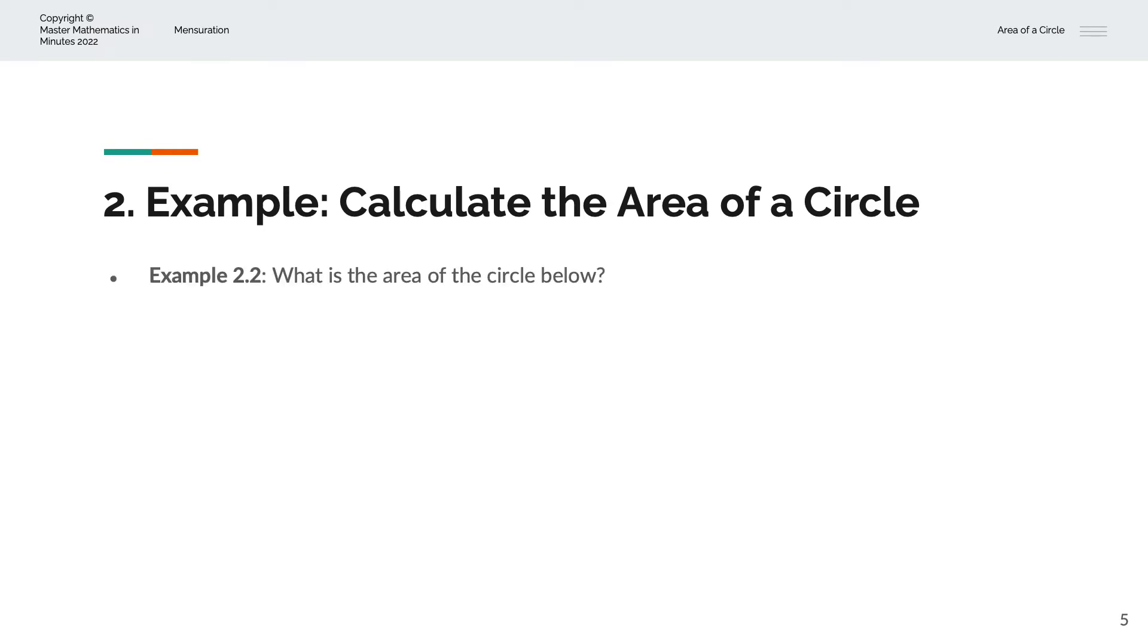In the second example, we'll also calculate the area of the circle below. And this circle has a diameter of 10 centimeters. And so it's easier to divide the diameter by 2 to obtain the radius and calculate the area using the radius.